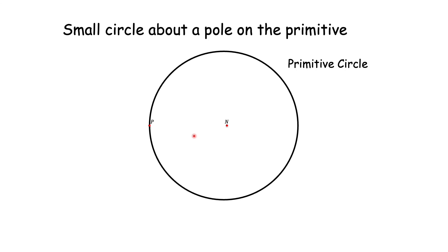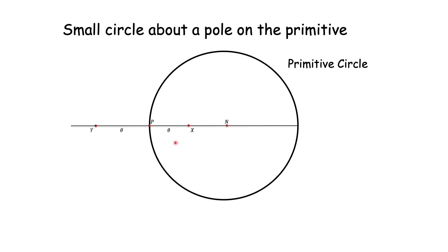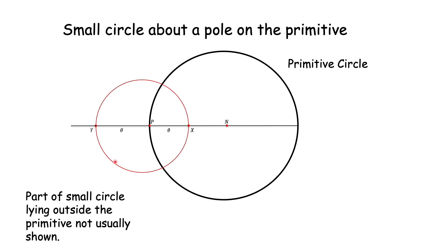As a final case, consider a pole lying on the primitive. The procedure to draw a small circle around this pole is exactly the same: draw a diameter through P, locate two poles X and Y on either side at angular distances theta, then draw the circle with XY as the diameter. Conventionally, we do not show the part of the circle lying outside the primitive, so we remove that portion to have the projection in standard form.